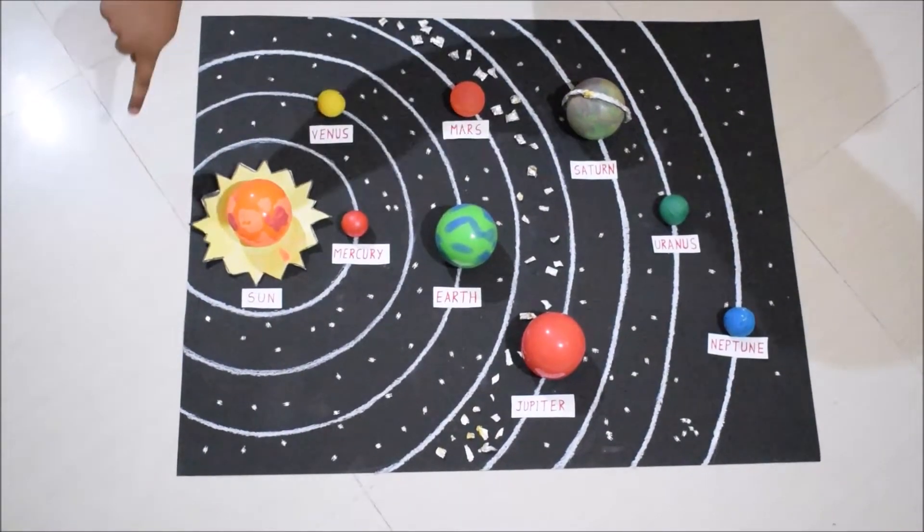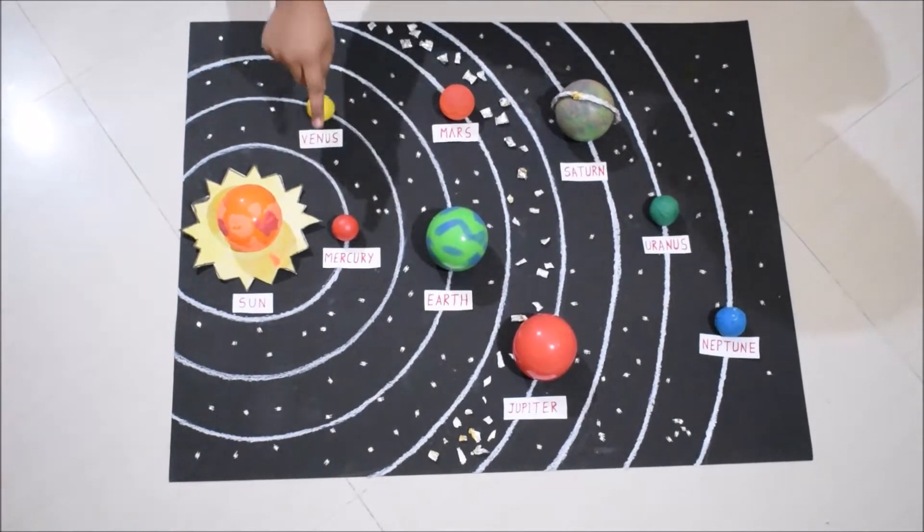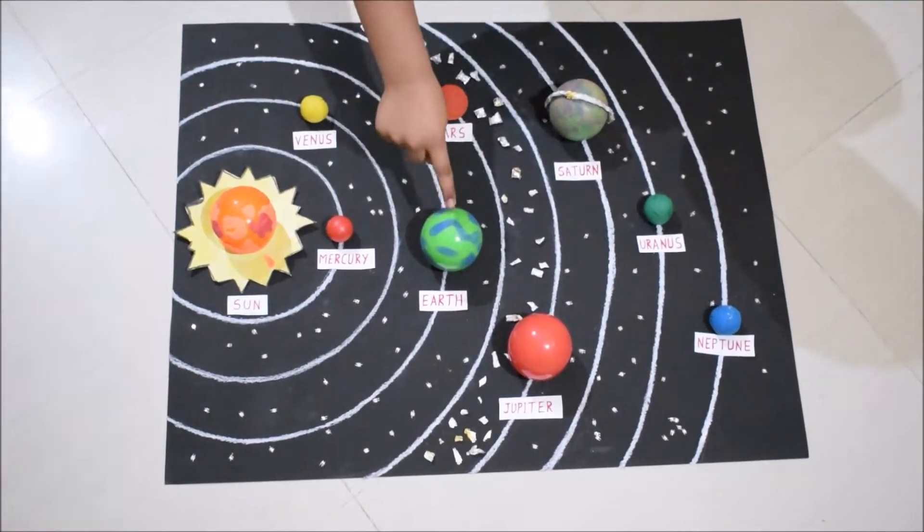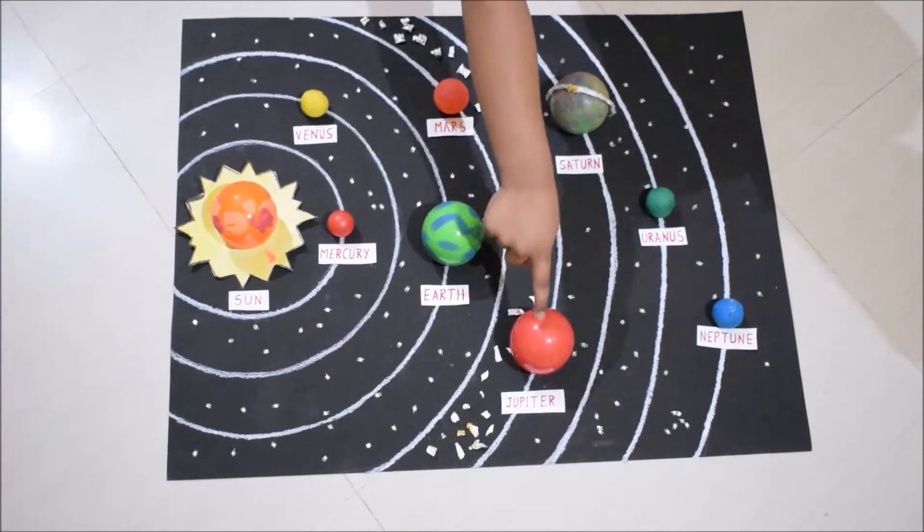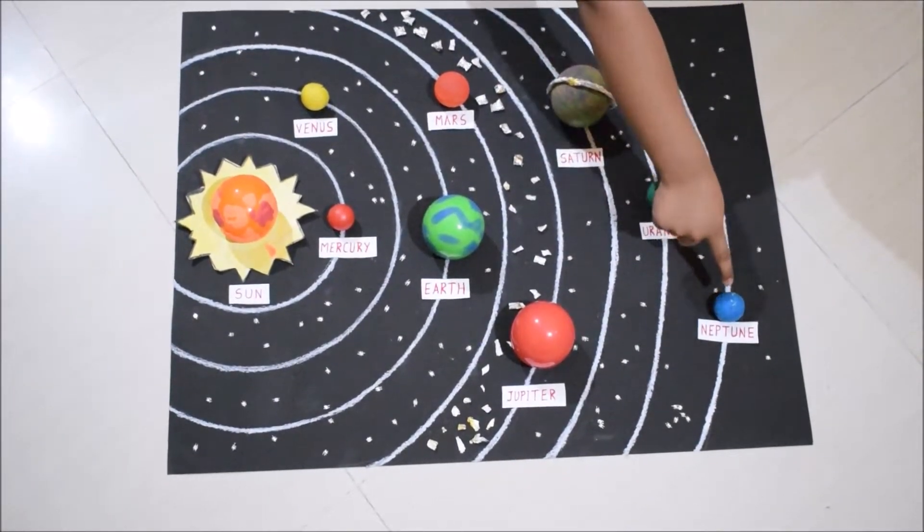The eight planets around the Sun are Mercury, Venus, Earth, Mars, Jupiter, Saturn, Uranus, and Neptune.